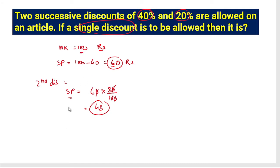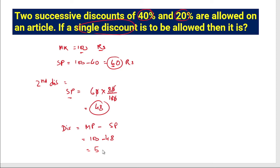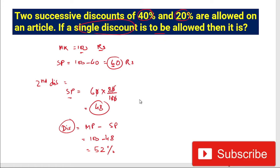Now the mark price is 100 and the selling price is 48. The discount equals mark price minus selling price, which is 100 minus 48 equals 52 percent. So 52 percent is the single equivalent discount to be given. That is the method to solve this type of problem.